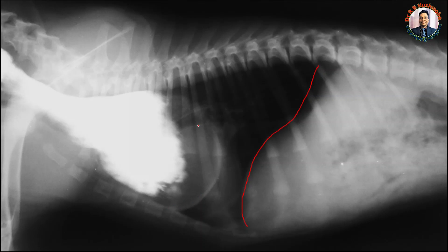This congenital anomaly is seen when there is a persistence of the right aortic arch, which connects from the aorta to the pulmonary artery and acts as a band-like structure. This is the reason why there is a dilatation of the esophagus cranial to this persistent right aortic arch.